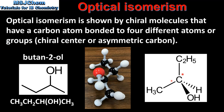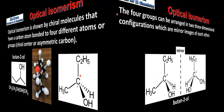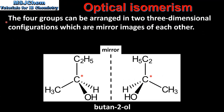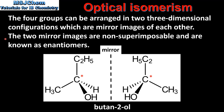On the right we have the stereochemical formula of butan-2-ol. The asymmetric carbon is marked with a red asterisk. The 4 groups around the chiral centre can be arranged in 2 three-dimensional configurations which are mirror images of each other. The 2 mirror images are non-superimposable and are known as enantiomers. Here we can see the 2 enantiomers of butan-2-ol — they are mirror images of each other and non-superimposable.